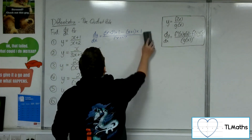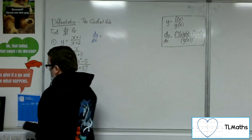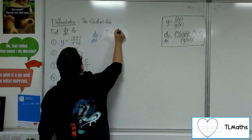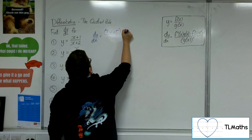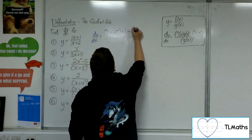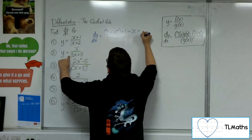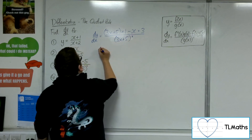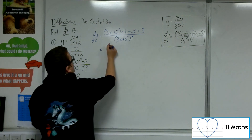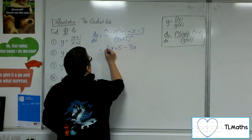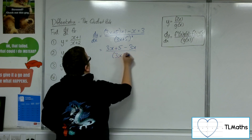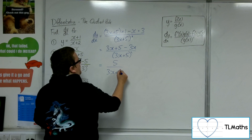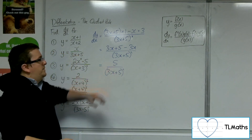Let's have a look at number 2. We've got y equals x over (3x+5). We start off by getting the bottom and multiplying by the derivative of the top, take away the top times by the derivative of the bottom, which is just 3. Simplifying the numerator: 3x+5 take away 3x, all over (3x+5) squared. The 3x's cancel, leaving 5 over (3x+5) squared.